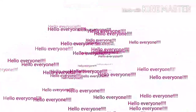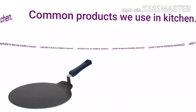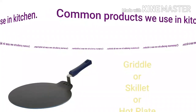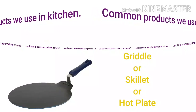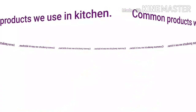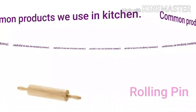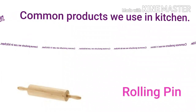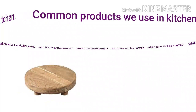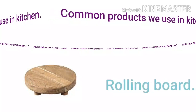Hello everyone, welcome back to my YouTube channel. Today we are going to discuss some English terms for the products that are commonly used in the kitchen. Our first product, jisko hum Hindi mein tawa bolte hai, isko English mein griddle, skillet, or hot plate bula jata hai. Next one is belan, jisko English mein rolling pin bula jata hai. Next we have chakla, jisko hum rolling board bula jata hai.